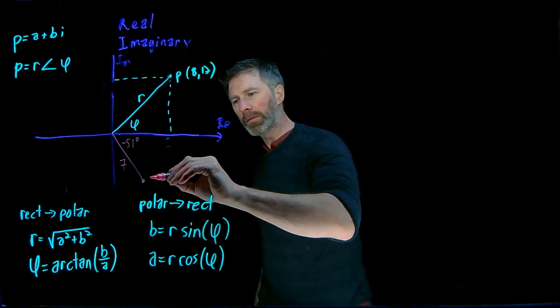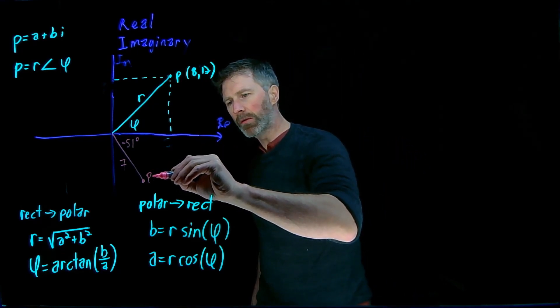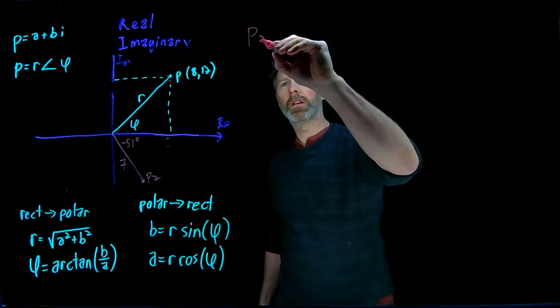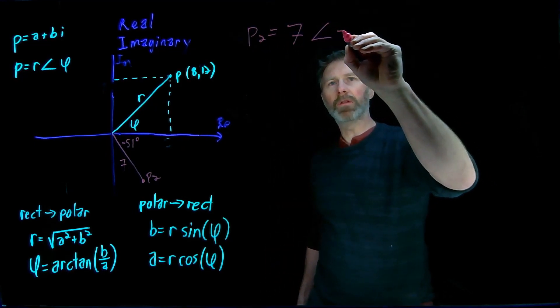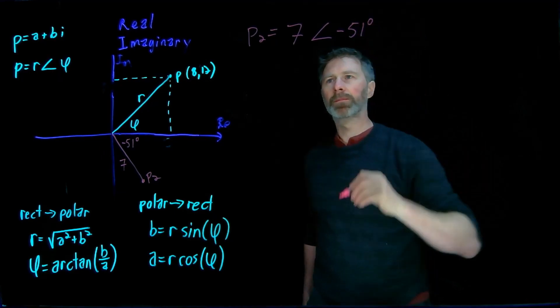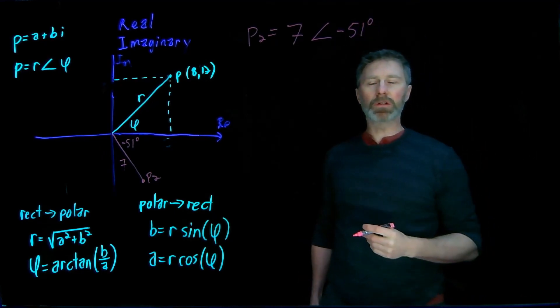Okay, let's do another example. We've got another point here, and let's actually call it P2. And P2 in polar coordinates is equal to 7 with an angle of negative 51 degrees. And I want to convert this into rectangular coordinates.